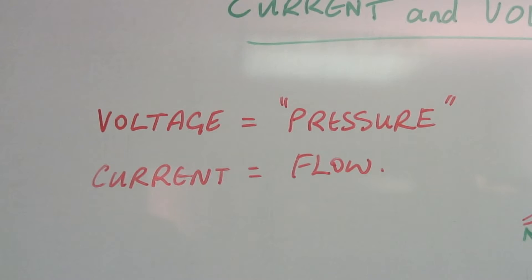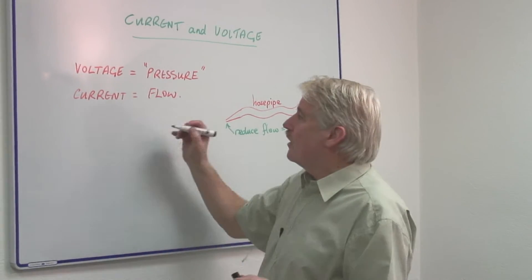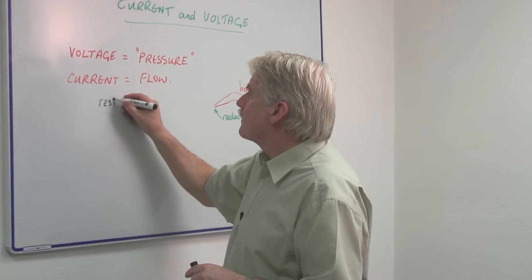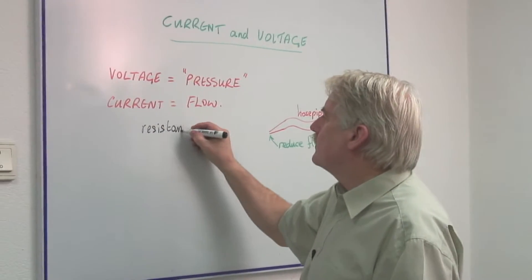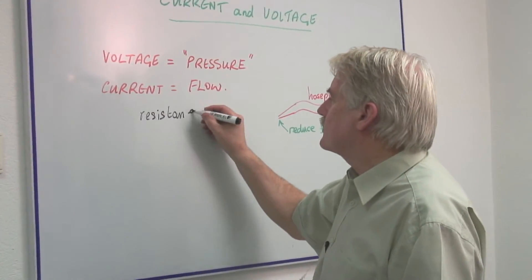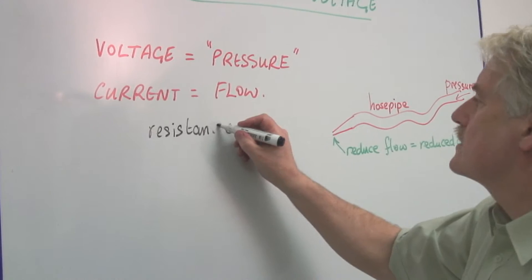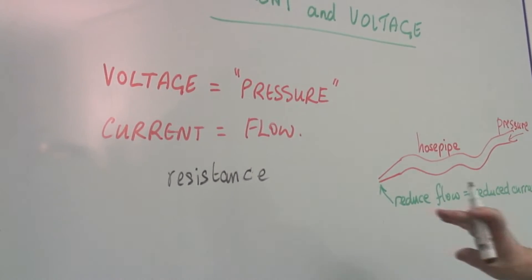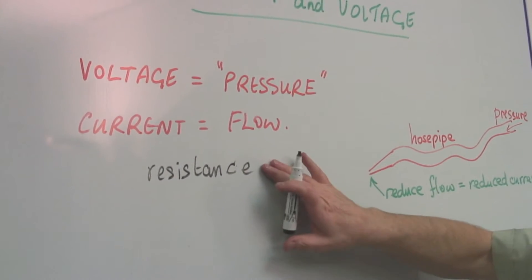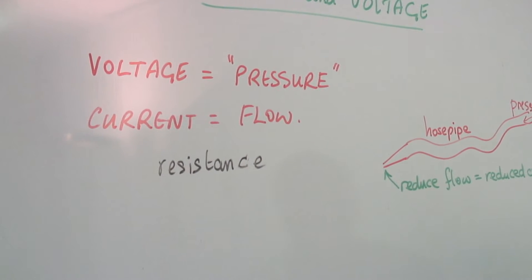Current, however, is the flow. And this depends on resistance. Resistance is an important term in all of electricity — it is the resistance to the flow of current.